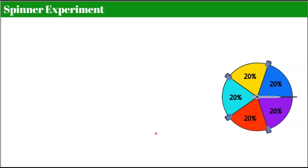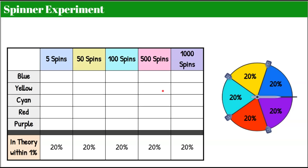Let's conduct our own spinner experiment. We're going to expect that 20% of the time it's yellow, 20% is blue, 20% is purple, 20% is red, and 20% is our turquoise blue. Here's the chart I'm going to use to gather my experiment data. I want to show you what happens the more times you conduct the experiment.